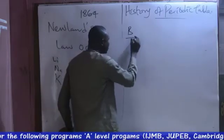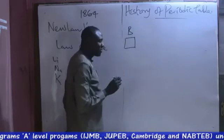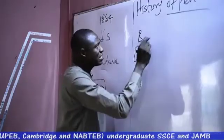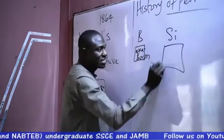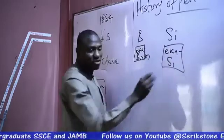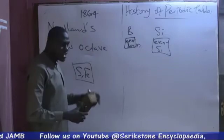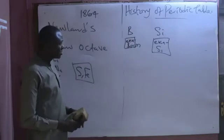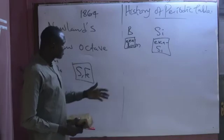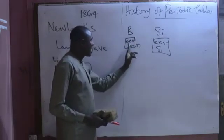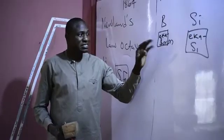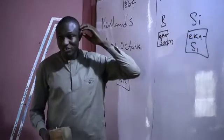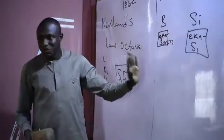For instance, under Boron, he left a space and said a particular element will be discovered in years to come, and named it Eka-Boron. He also left a gap below Silicon and named it Eka-Silicon, and so on. So he was able to predict undiscovered elements, which makes his periodic table unique compared to previous ones. Later on, the element gallium was discovered and fit in the position where Mendeleev proposed. Likewise germanium, and so on — they all fit in the positions predicted by Mendeleev, which is why we refer to him as the father of the periodic table.